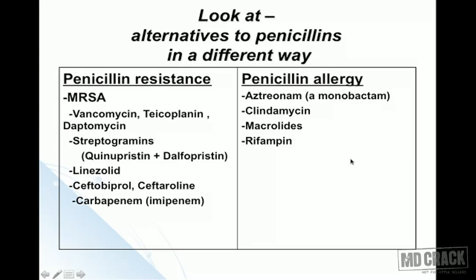On the right side are drugs used if the patient has penicillin or beta-lactam allergy. Options include aztreonam — a beta-lactam antibiotic that can still be used in penicillin-allergic patients — clindamycin, macrolides, and lastly rifampin, which is rarely used. With this discussion, we've arrived at macrolide antibiotics.